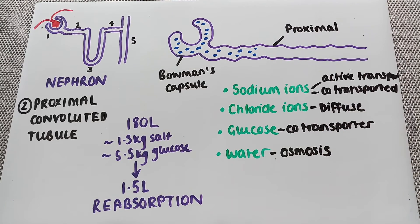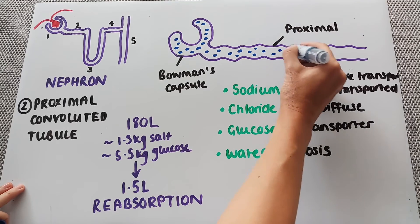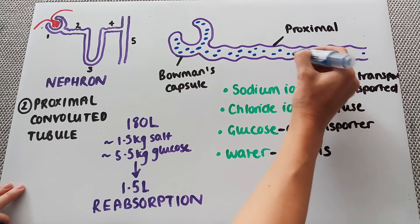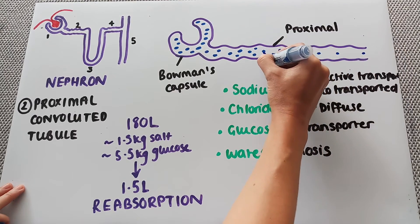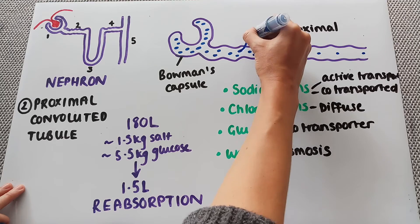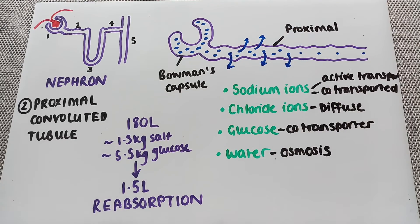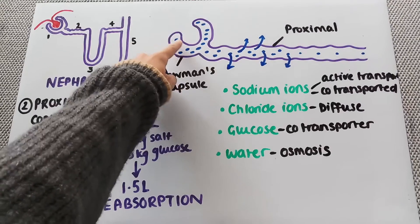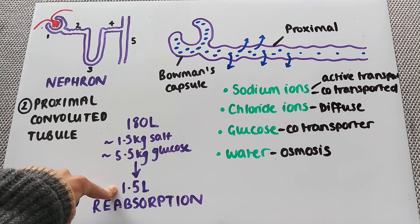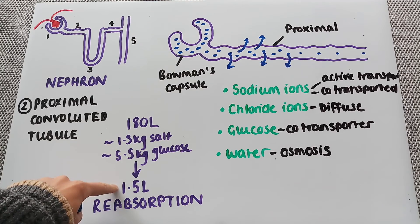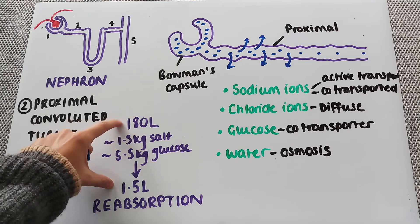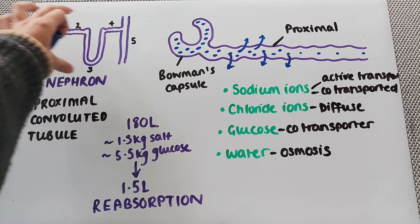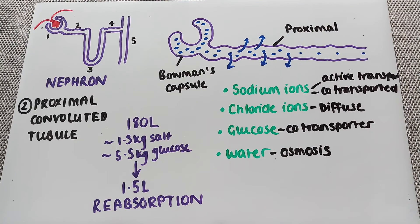As the filtrate starts to move down the proximal convoluted tubule, it will become less and less because of reabsorption along the way. Remember, we're getting from 180 litres — pushed out as the initial glomerular filtrate — down to 1.5 litres of final urine that is produced. Though this doesn't all happen in the proximal convoluted tubule; it does happen throughout the rest of the nephron as well, with quite a lot of reabsorption in that section too.